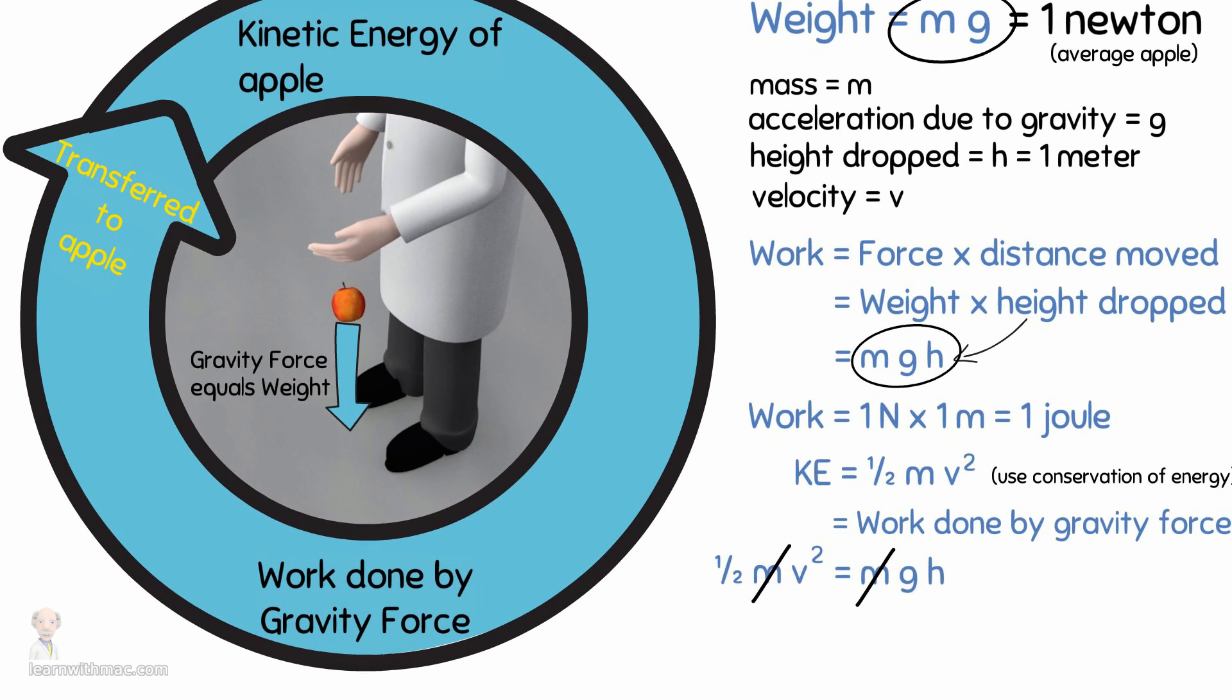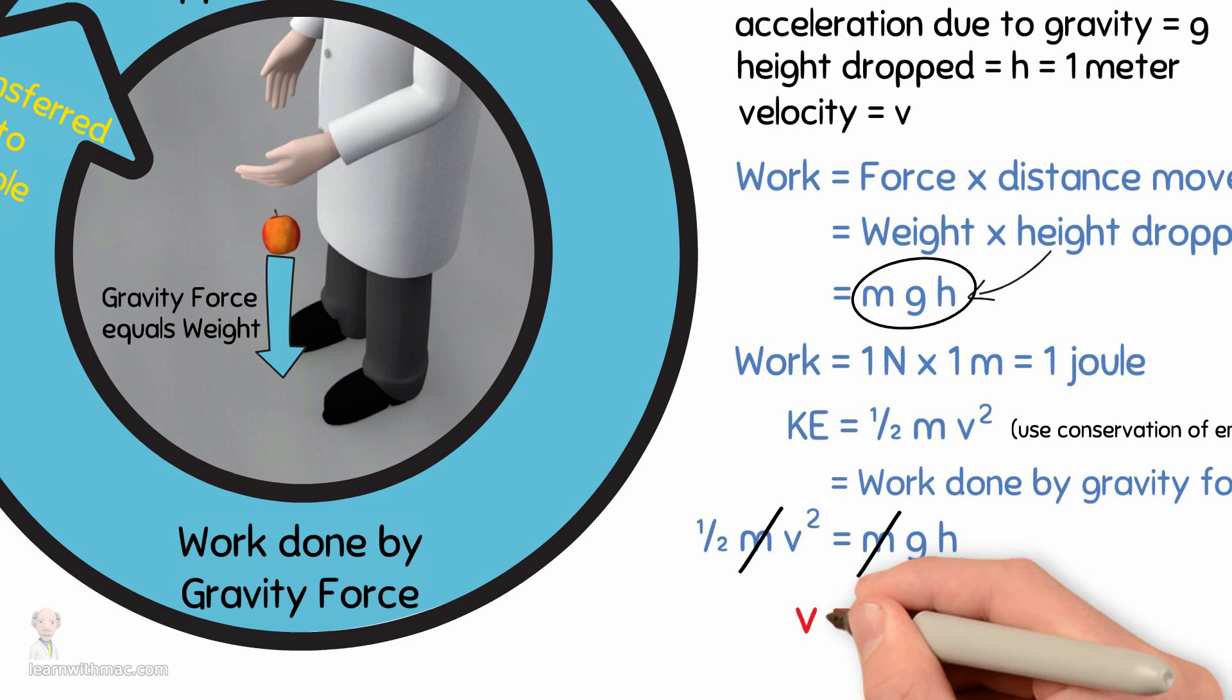And rearranging this, we have the velocity of the apple is given by the square root of two times the gravitational acceleration times the height dropped.